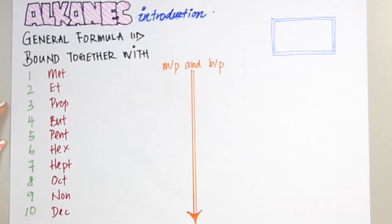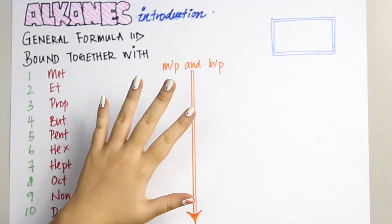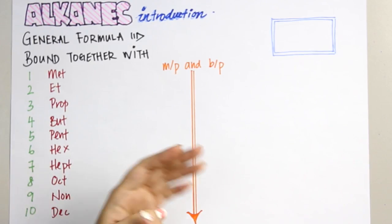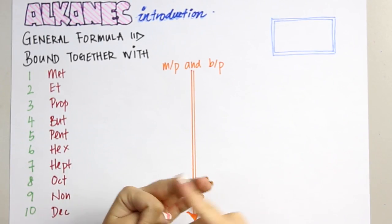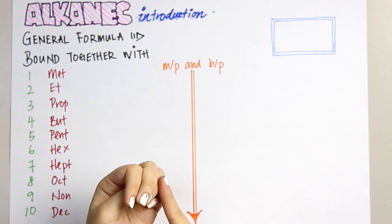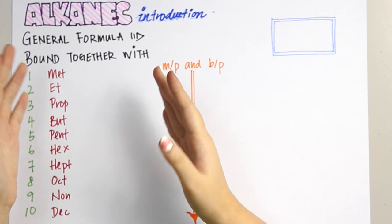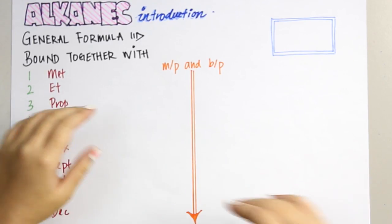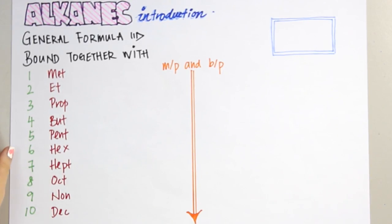Hi everyone, from this chapter we will learn about alkenes among the five homologous series—alkenes, alkanes, alcohols, esters, and carboxylic acids. Alkenes is the first one that we will learn.